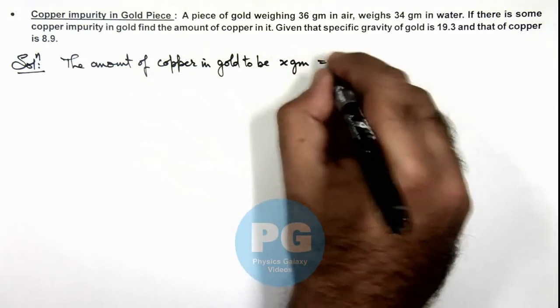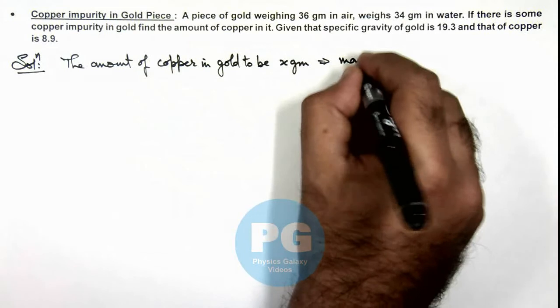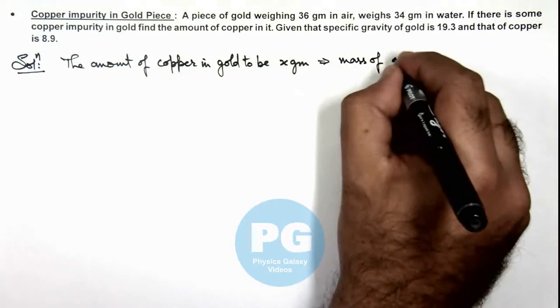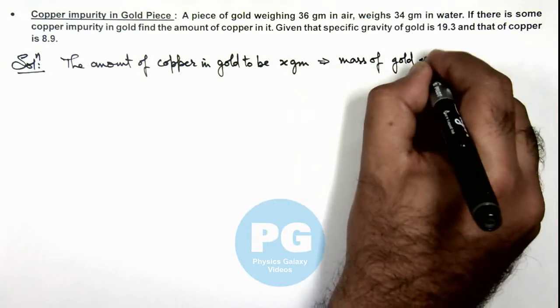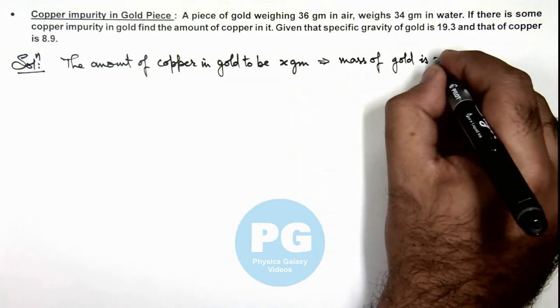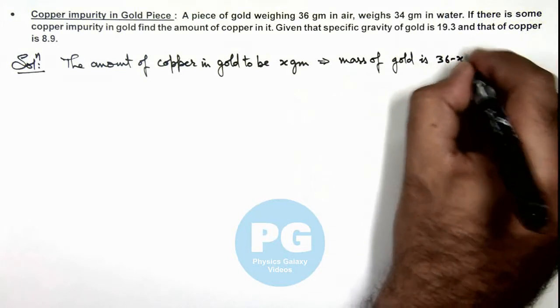This implies the mass of gold will be 36 minus x grams, because in air it is weighing 36 grams in total.